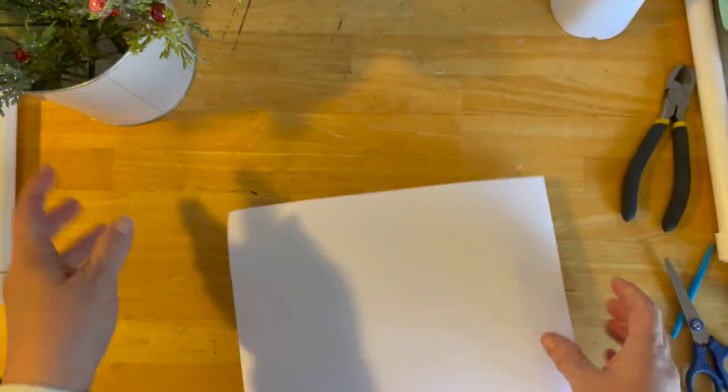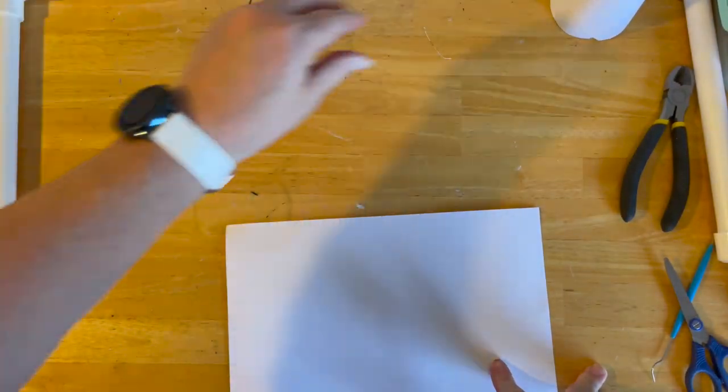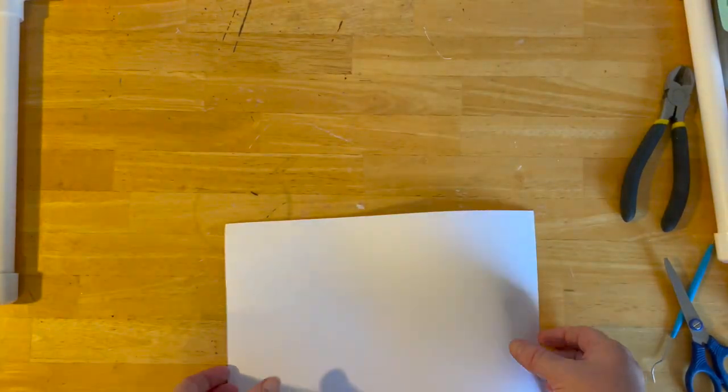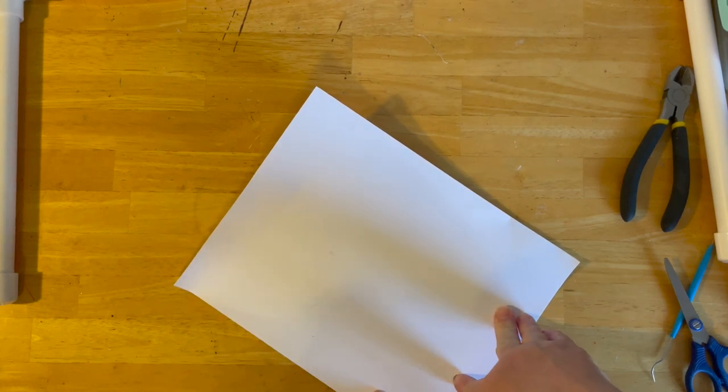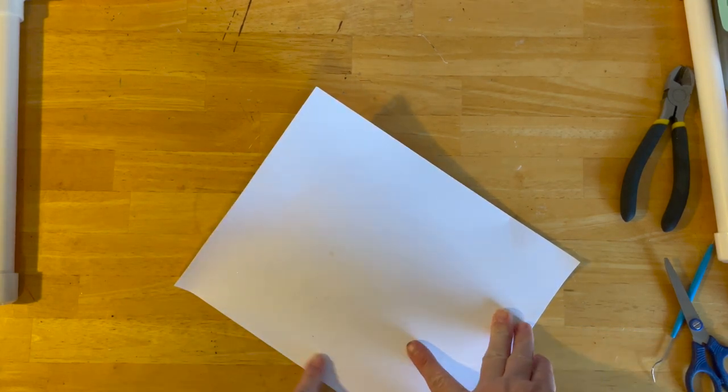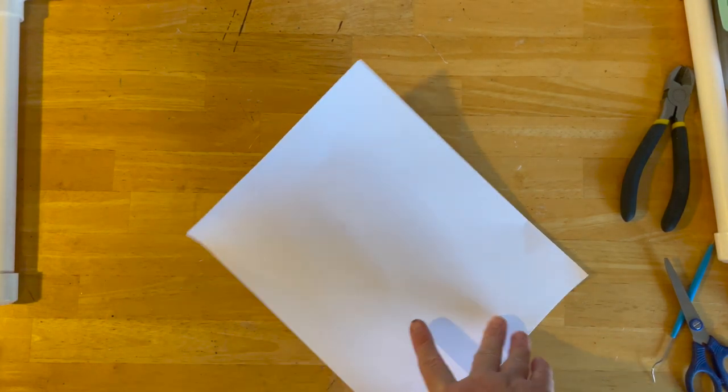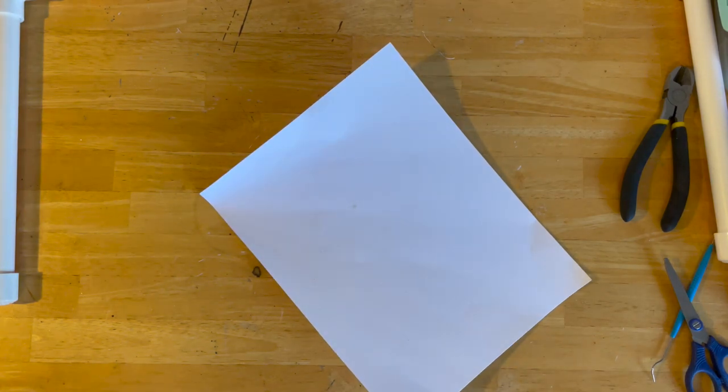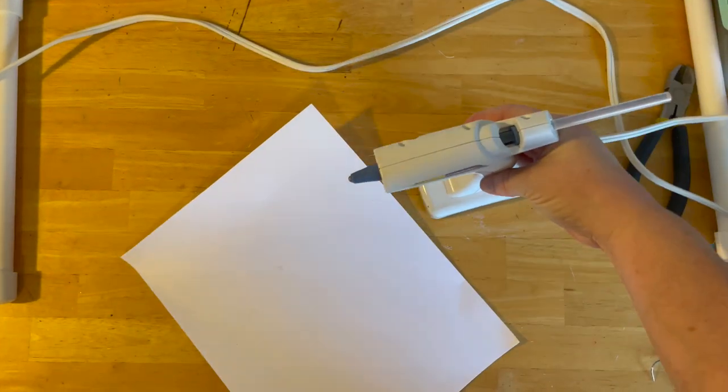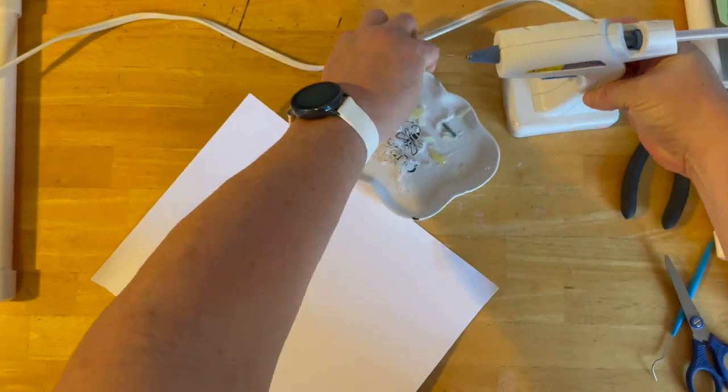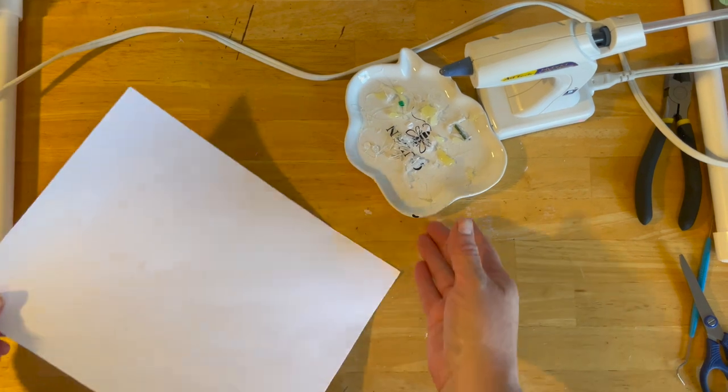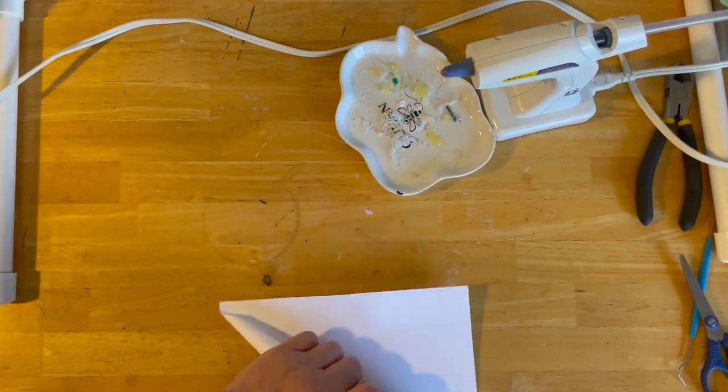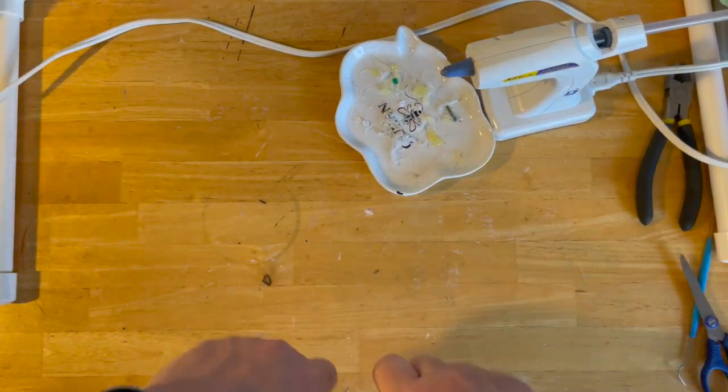First things first, I just have a piece of cardstock. It's a little thicker than regular construction paper, but you can use any paper you want, including poster board. What I'm going to do is make a Christmas tree shape, a cone. I do have my hot glue gun here, and I have my piece of paper and I'm just rolling it into a cone.